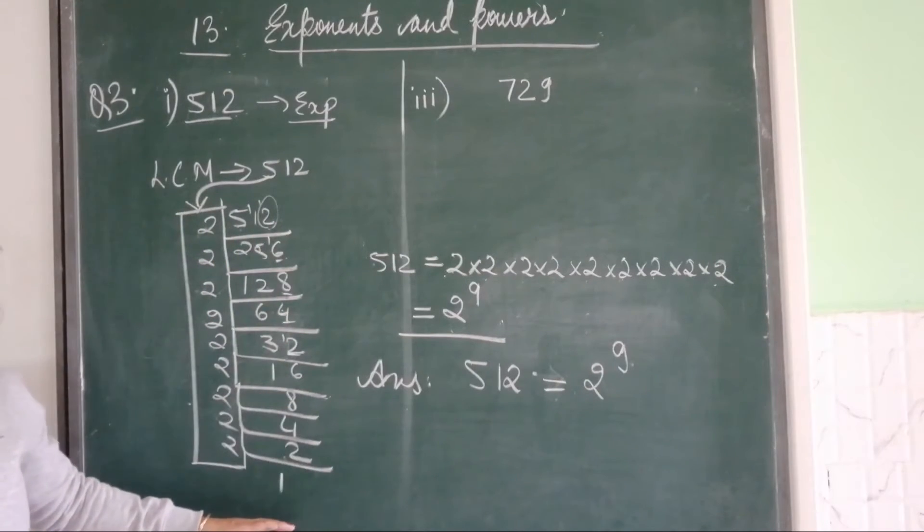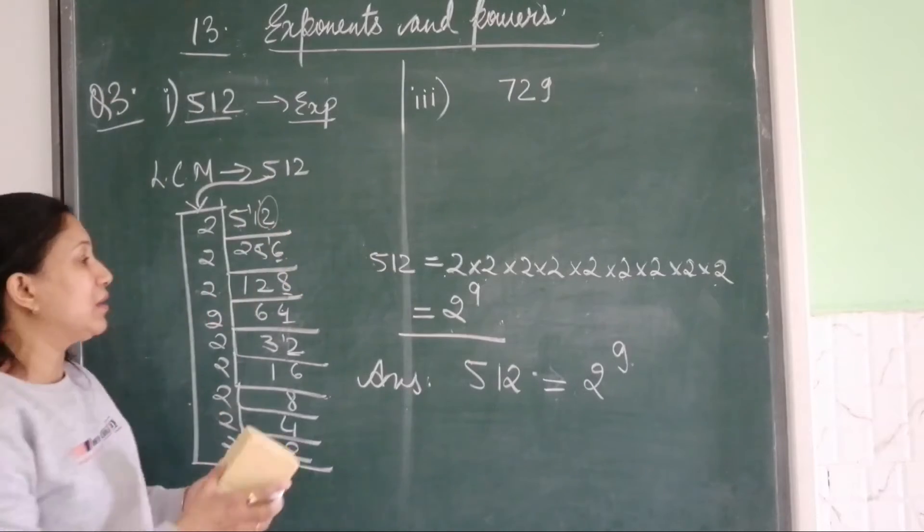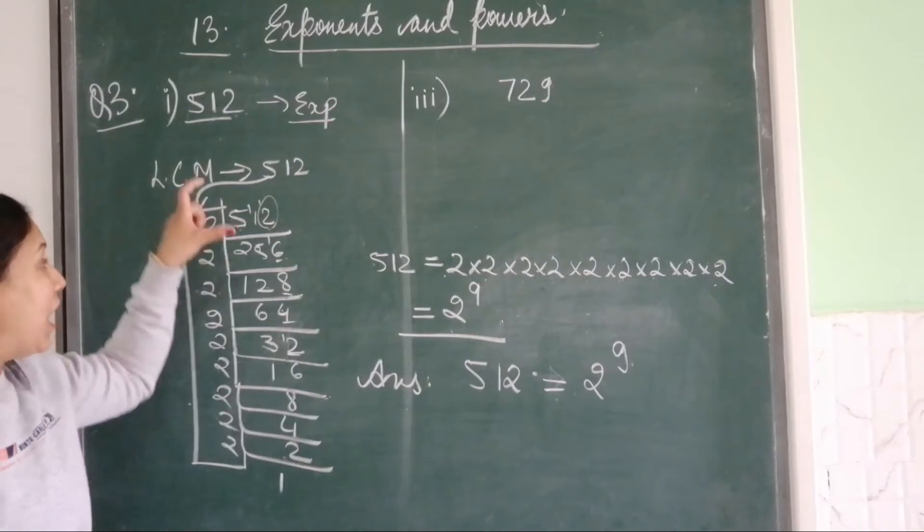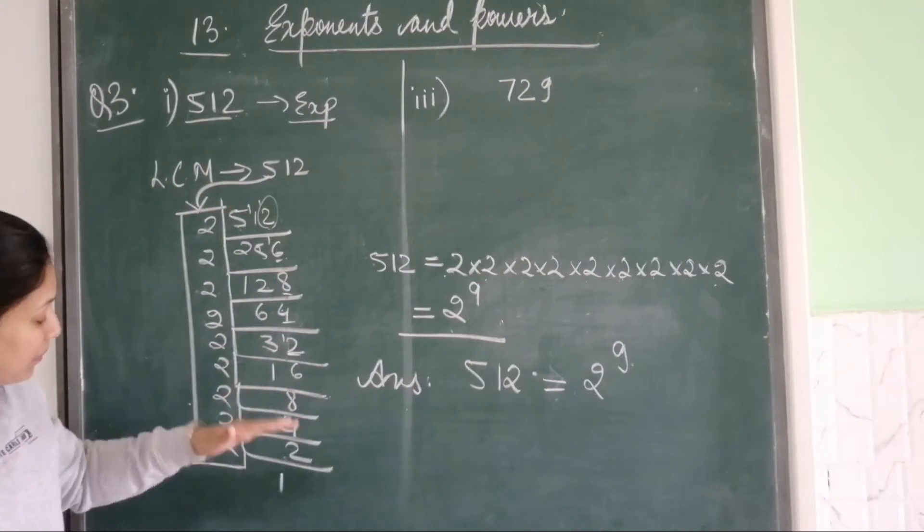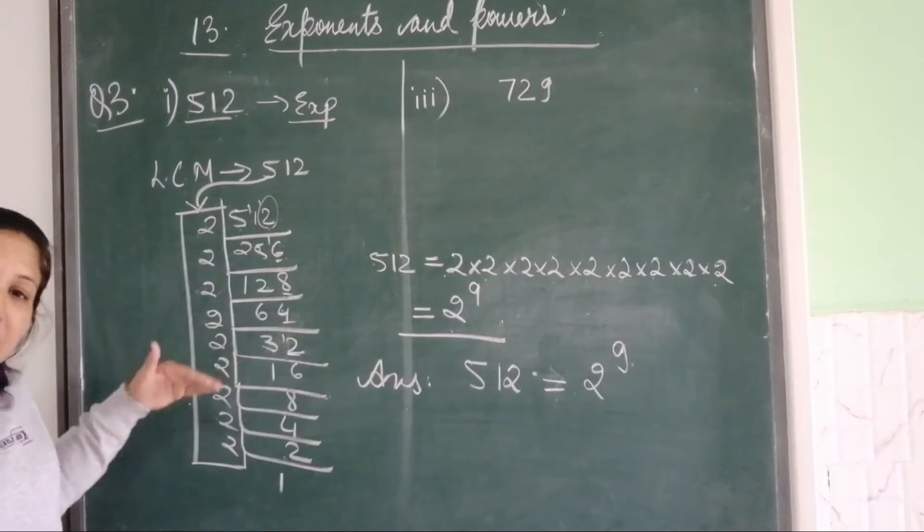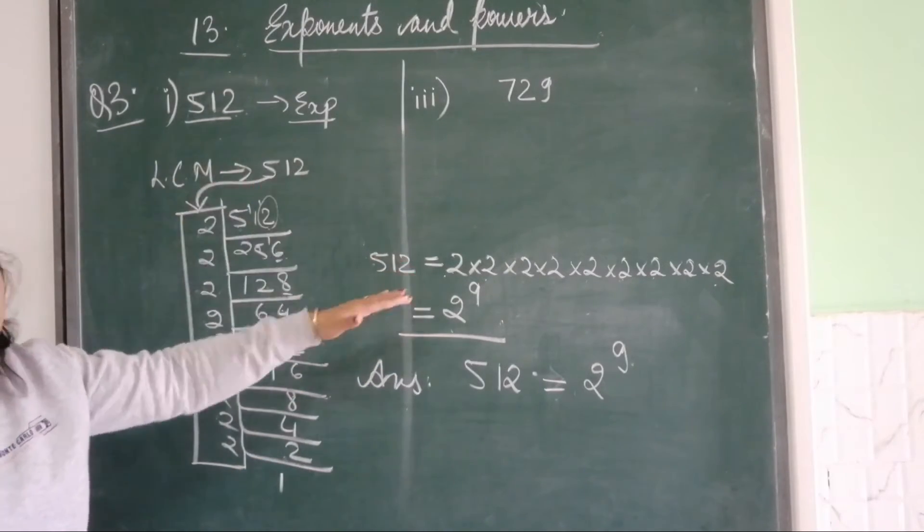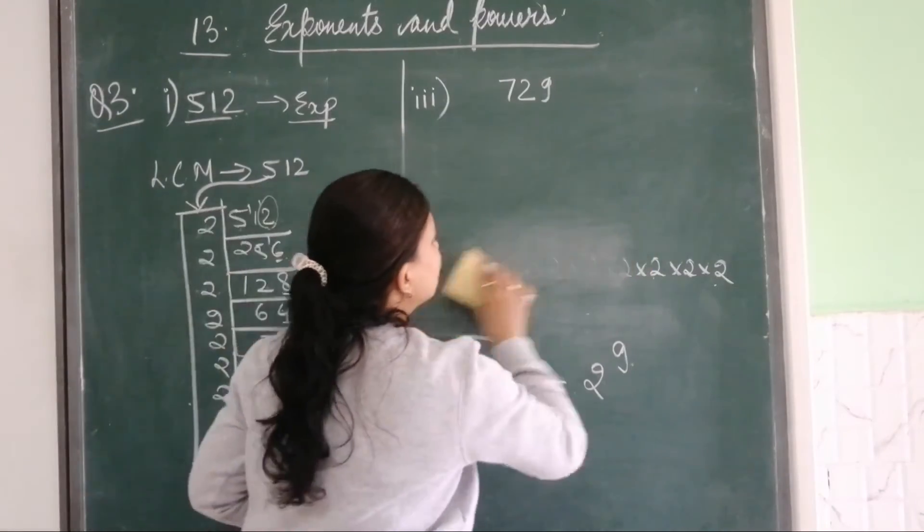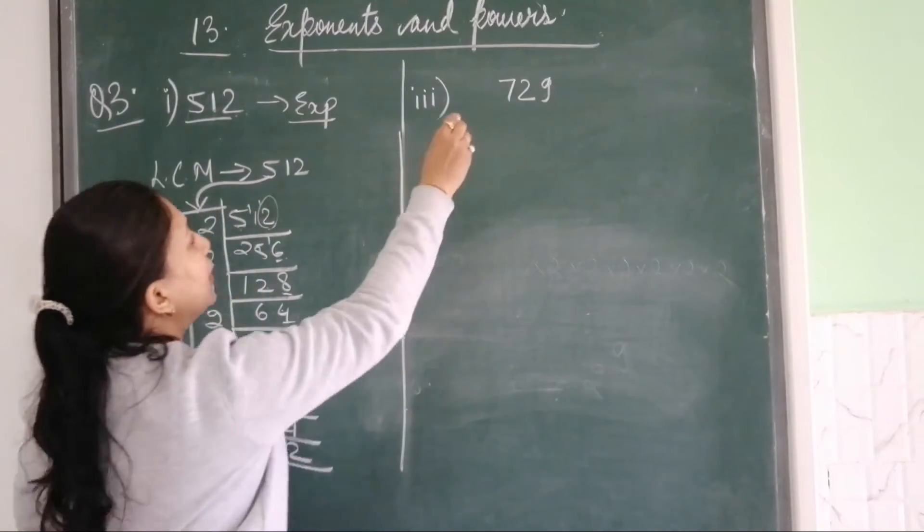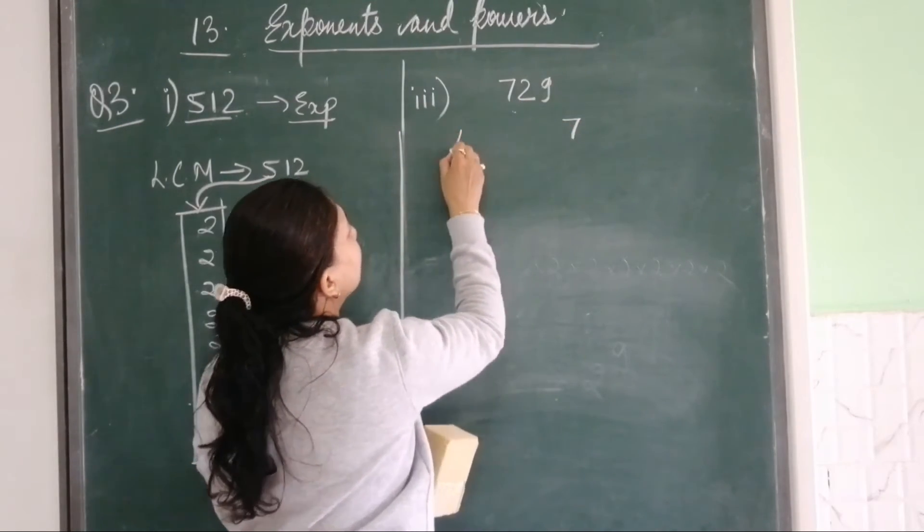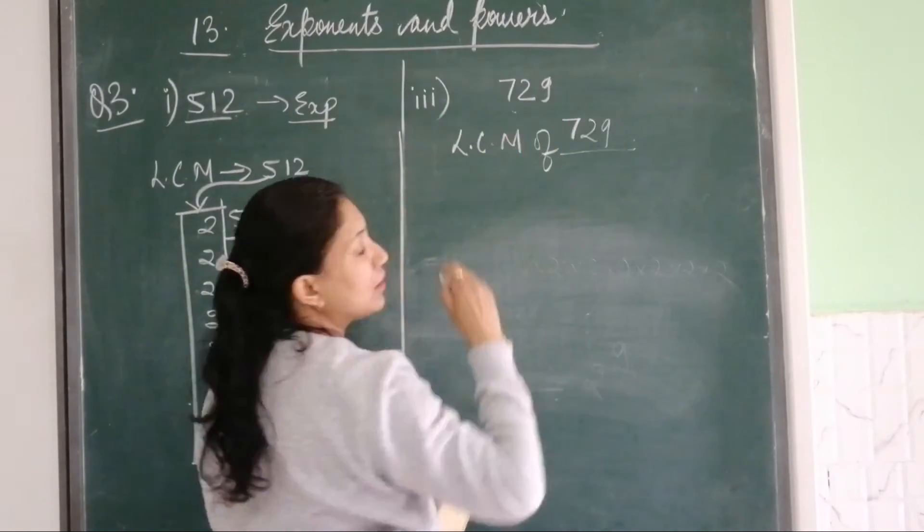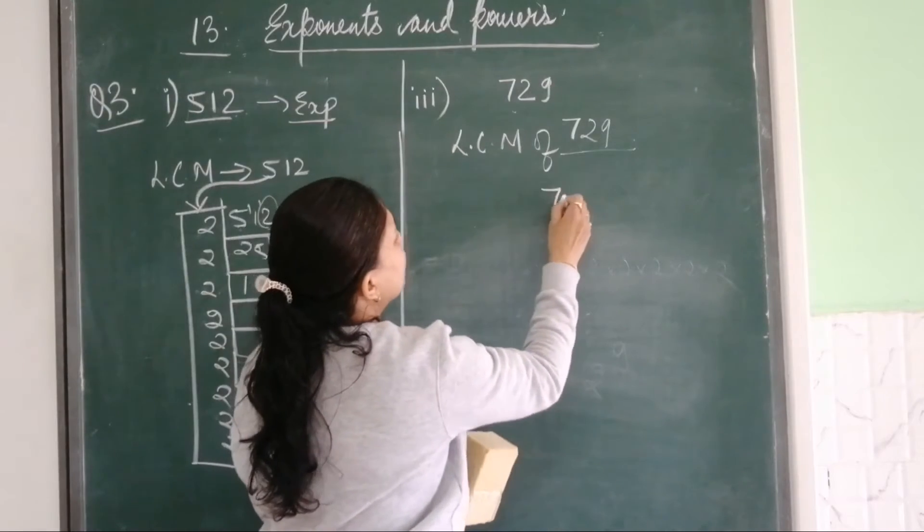I hope you have understood what you have to do. Still, let us have one more practice with another question. Pause the video and copy the solution. After you take the LCM, just drop one line, leaving one line, then you write down all this. Now check the third part of the same question, question number 3. Now what do you have? You have 729. You will take LCM of 729.